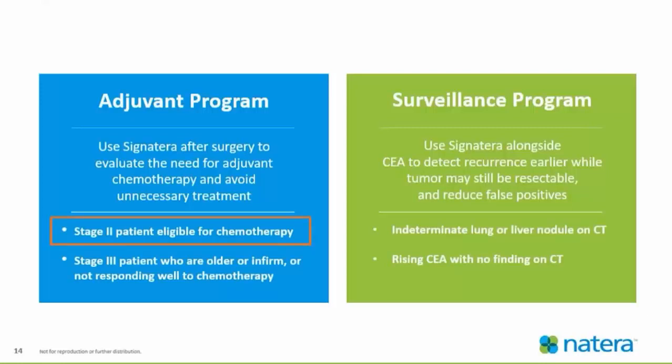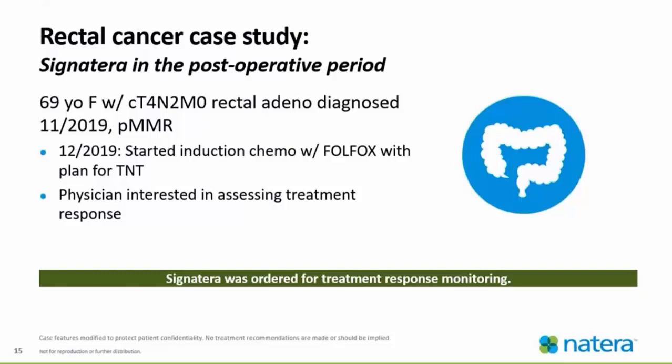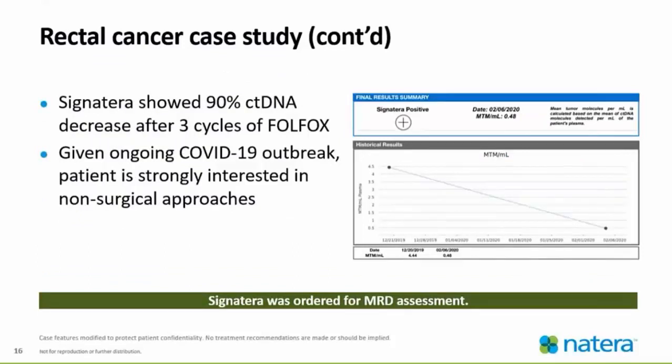The first case study is a Stage 2 patient eligible for chemotherapy in the adjuvant setting. This patient has a history of rectal cancer — a 69-year-old female with a T4N2 rectal adenocarcinoma diagnosed in November 2019. The patient started with induction chemo of FOLFOX in December, and the plan was for TNT, or total neoadjuvant treatment. The physician was interested in assessing the treatment response, so Signatera was ordered. The next slide shows what a Signatera report looks like. Signatera showed a 90% ctDNA decrease after three cycles.